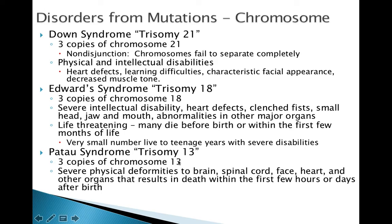The last one we're going to look at today is called Patau syndrome, which is when the 13th pair of chromosomes is affected and someone has three copies of that chromosome. These people have severe physical deformities, mostly to the brain, spinal cord, face, heart, and other organs. These individuals would normally die within hours or days of birth. Unlike Down syndrome children, Patau syndrome children would not be able to live a productive and healthy life.